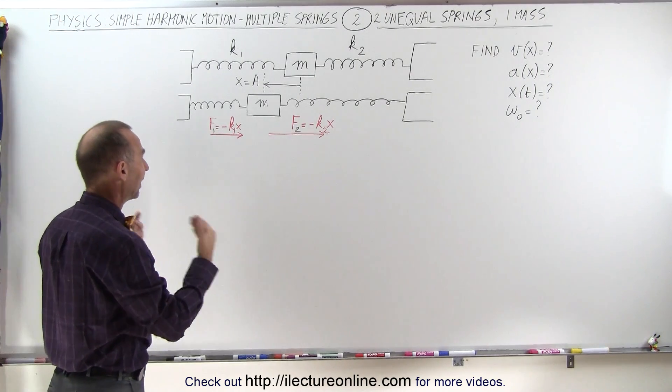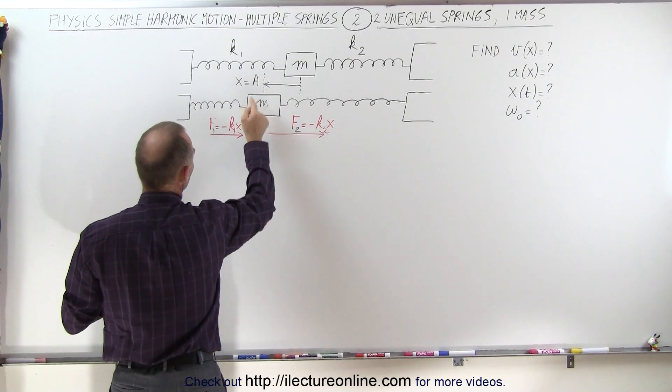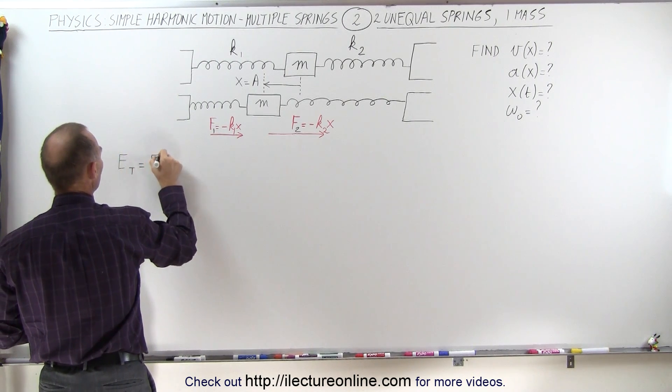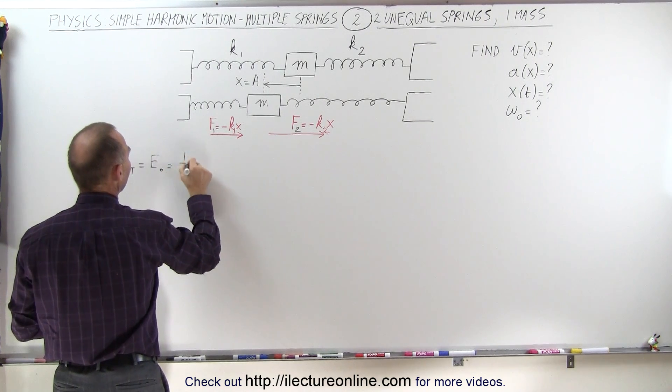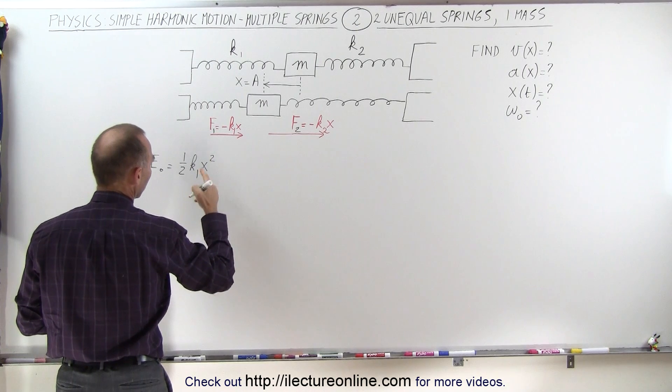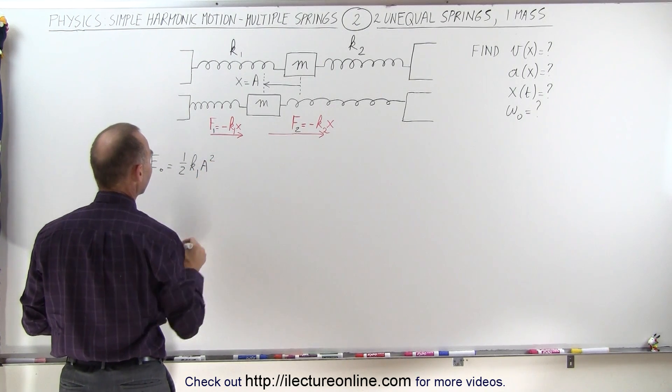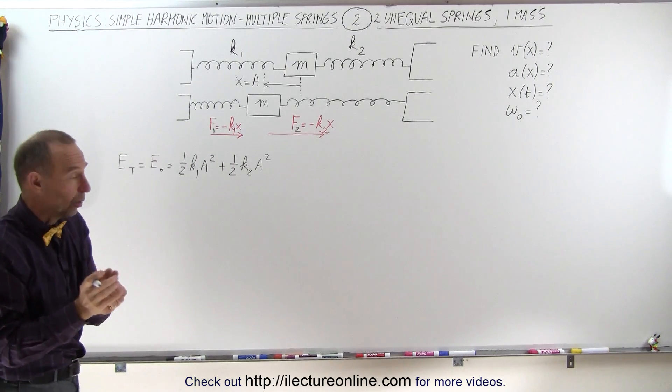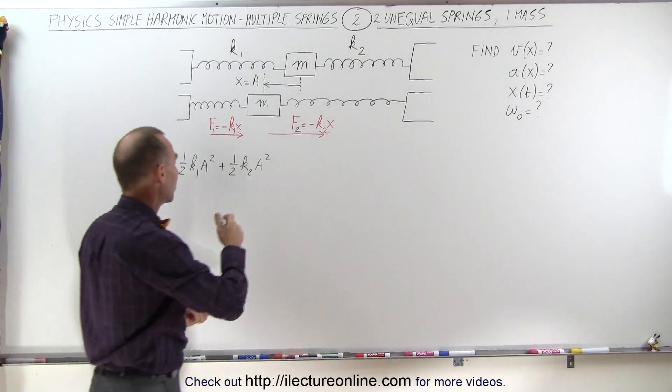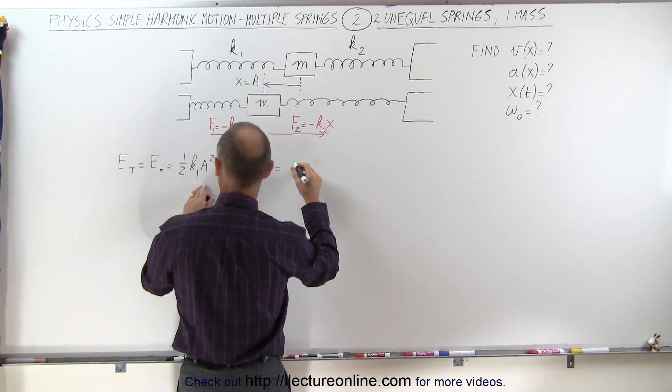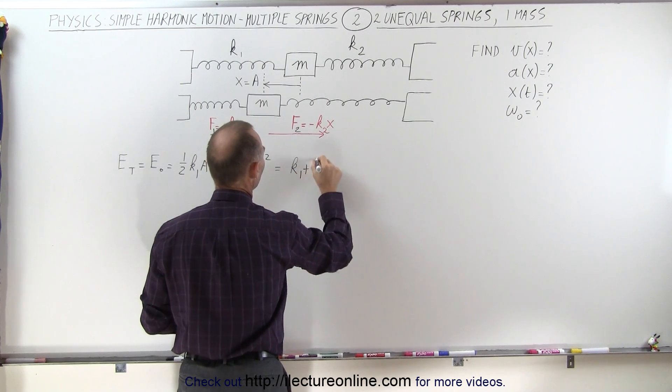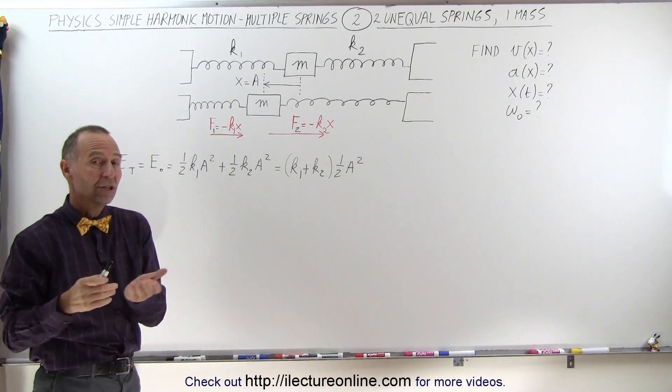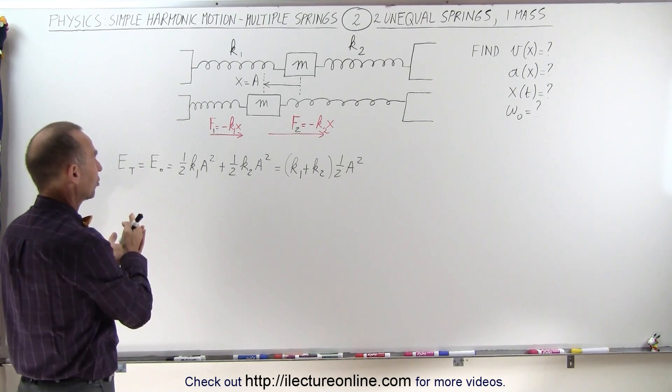Again, we're going to start off by finding the total energy in the system when we move the object in one direction to its maximum amplitude, a. And so we can then say that the total energy, E total, is equal to the initial energy that we put into the system, which is equal to one-half k1 x squared. In this case, since x is equal to a, I should write one-half k1 a squared, plus one-half k2 a squared, because each one of these springs have a different spring constant. So we can actually factor out one-half a squared, so this can be written as k1 plus k2 times one-half a squared. So that would be the total energy starting when we push the block out to one direction, and then we'll let go.